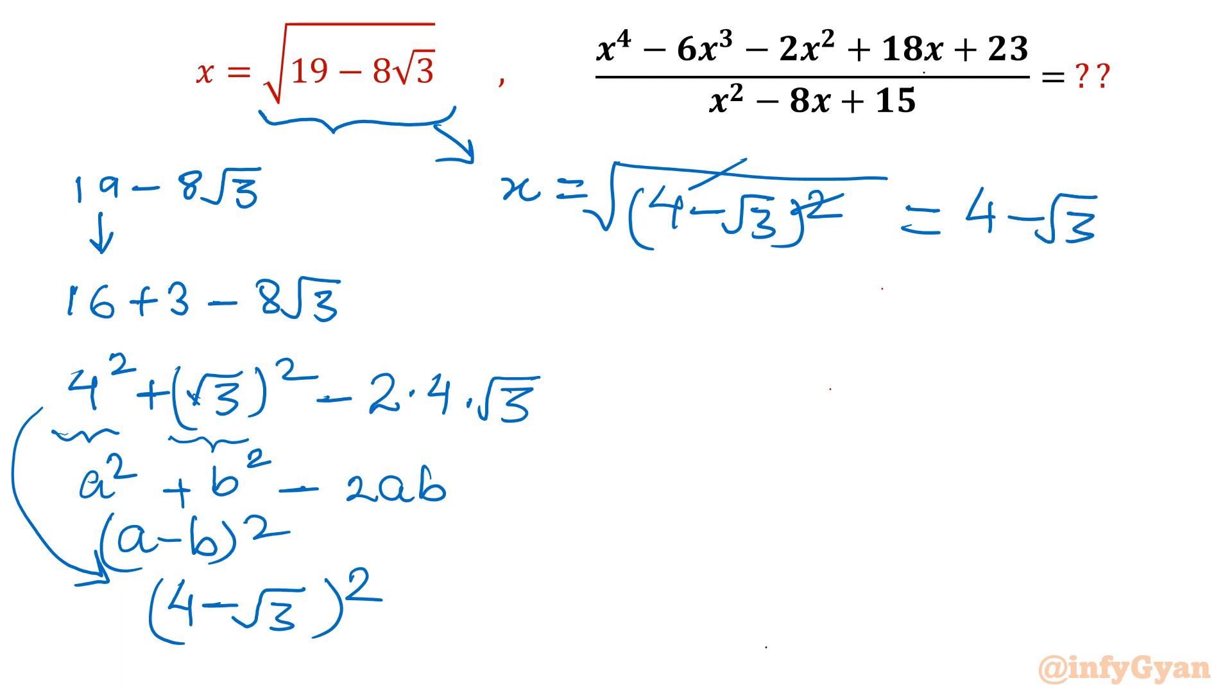Now what I will consider here? I will square both sides. Or let me write x - 4 = -√3. And what I will consider: 4 - x = √3. Now consider square both sides.